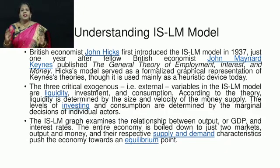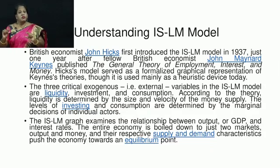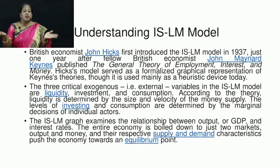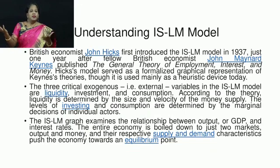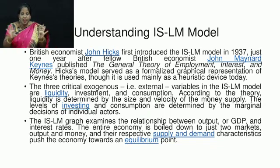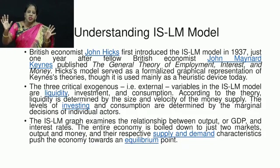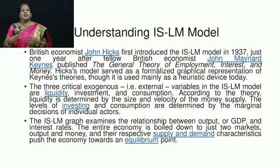According to the theory, liquidity is determined by the size and velocity of the money supply. The levels of investing and consumption are determined by the marginal decisions of individual actors. When we have more income, we consume more. However, during COVID-19, we are not going out to hotels to consume things — for example, having pizza or burger — because certain foods are restricted. As a result, the consumption level reduces.